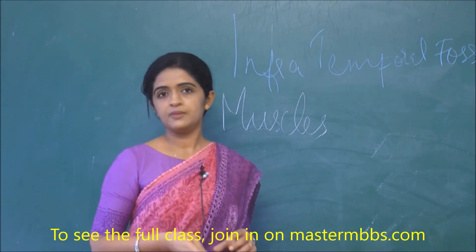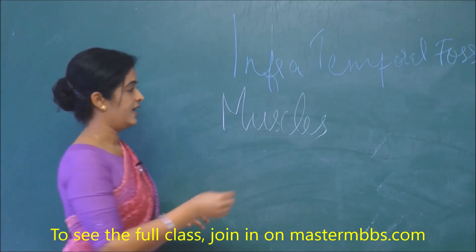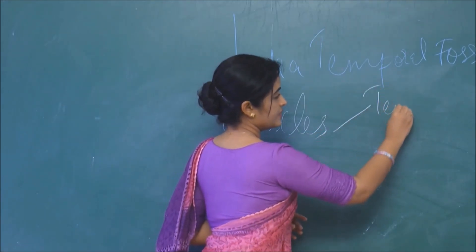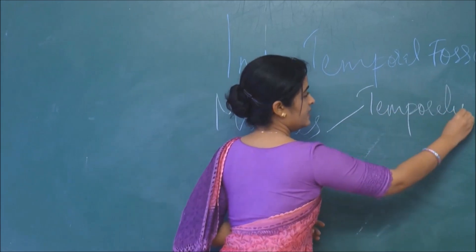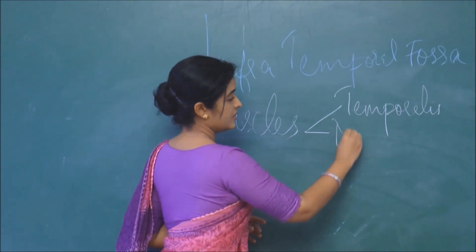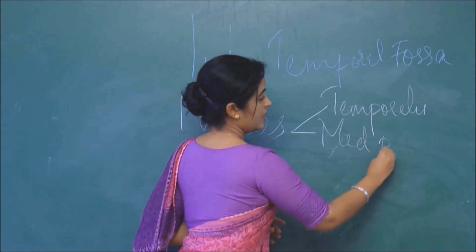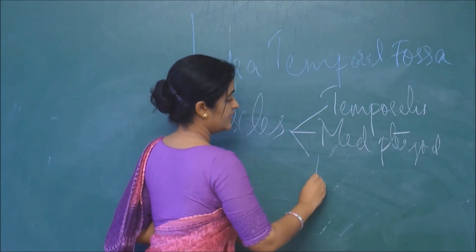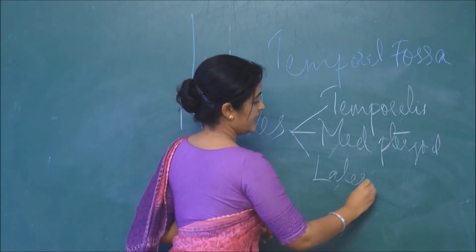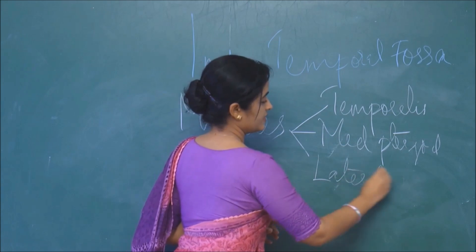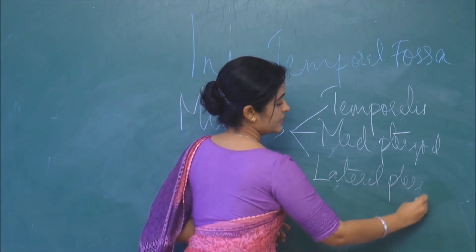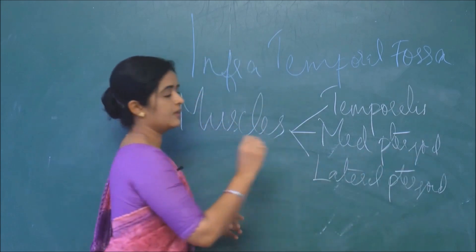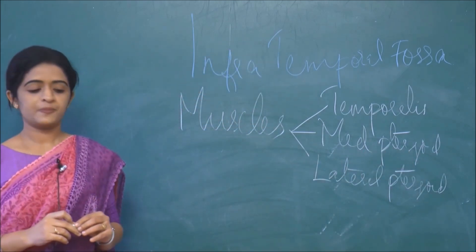So which are the remaining three muscles? We have temporalis, then medial pterygoid, and the third one is lateral pterygoid. These are the main muscles coming in the infratemporal fossa.